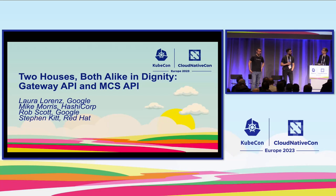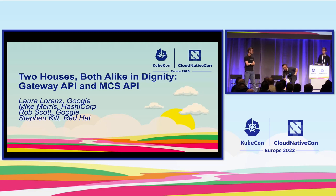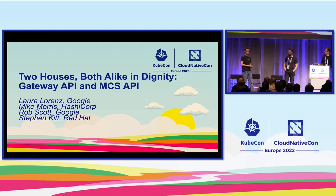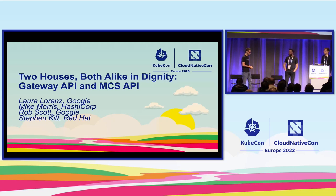Welcome, everyone, to this panel: two houses both alike in Dignity — Gateway API and MCS API. I'm Stephen Kitt, I work for Red Hat on the Submariner project. I'm Rob Scott, I work for Google on Kubernetes networking, and I'm a Gateway API maintainer. And I'm Mike Morris, and I work for HashiCorp on Consul, and I am one of the co-leads of the Gamma initiative.